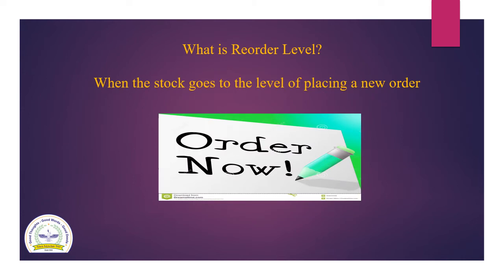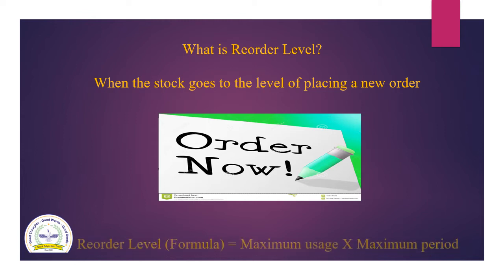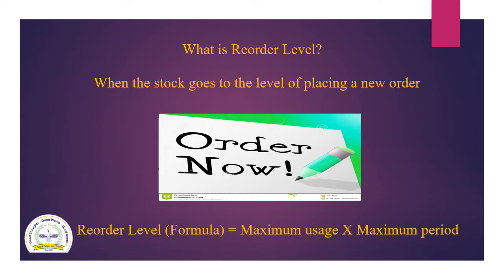When the stock goes to the level of placing a new order, it is an alarm to the purchase department that it is time to order now. The formula to calculate re-order level is: maximum usage multiplied by maximum period.